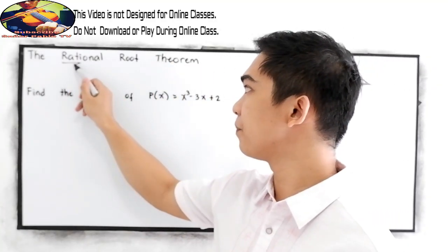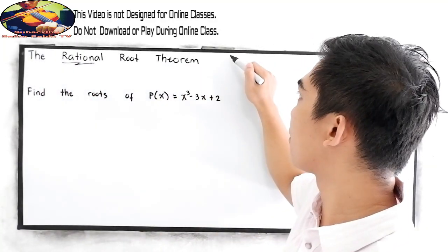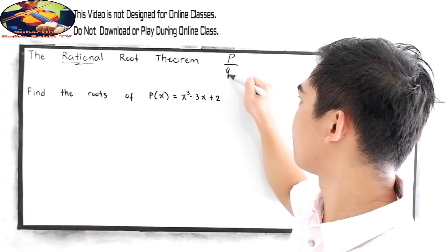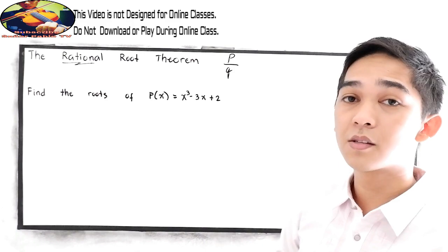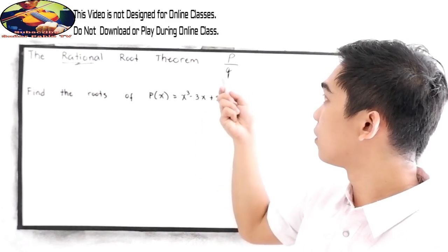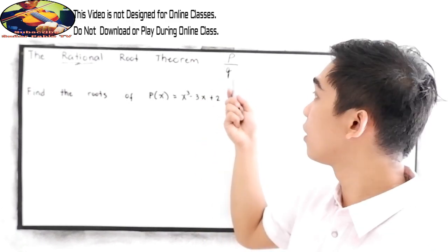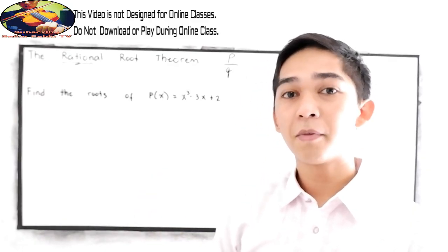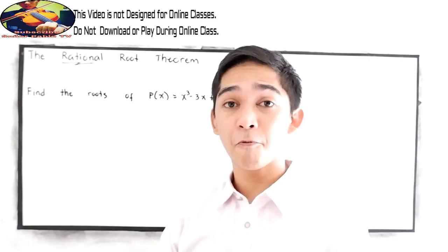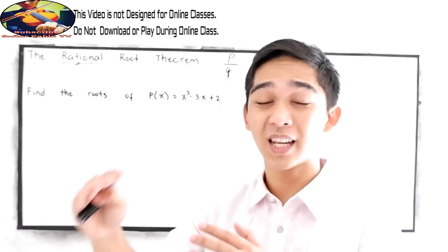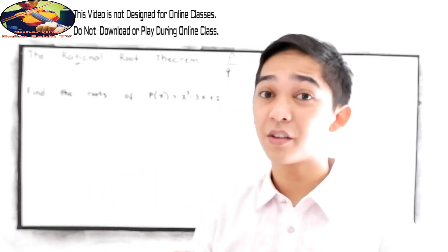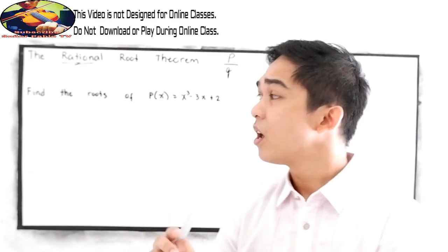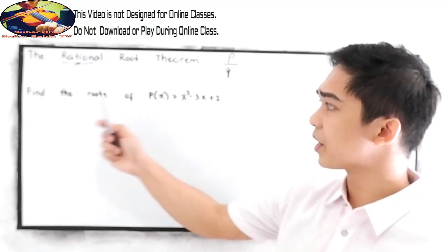It came from the root word ratio, meaning we have P over Q, where Q must not be equal to zero. Unlike in the Remainder and Factor Theorem where we have denominators, find the zero of the denominator, then use synthetic division. In the Rational Root Theorem, we approach it differently.